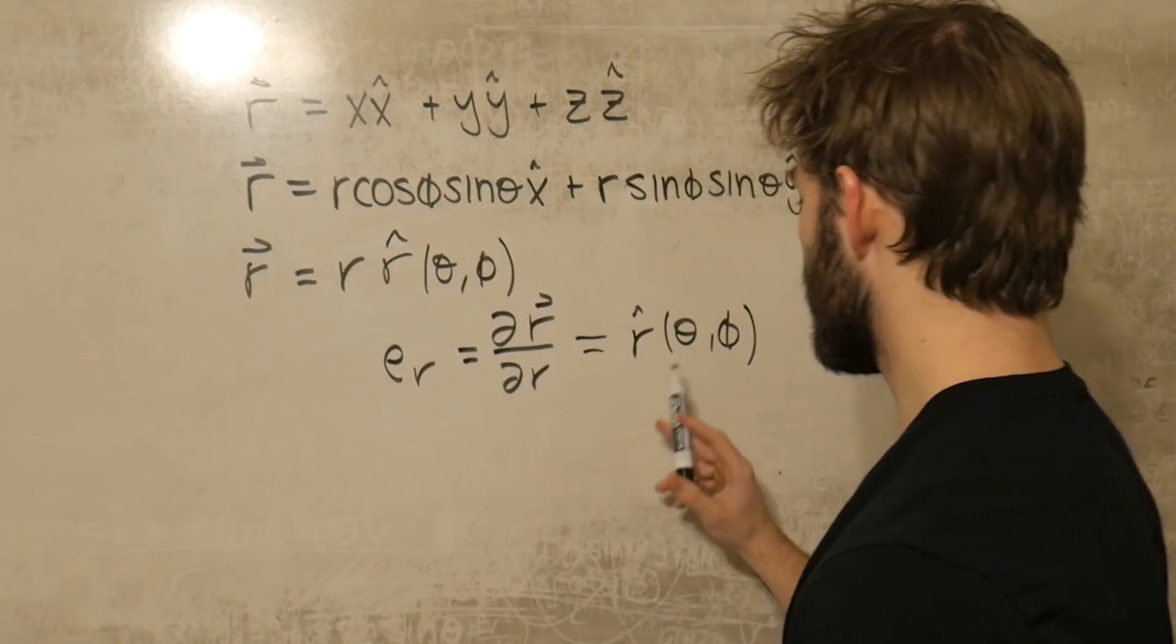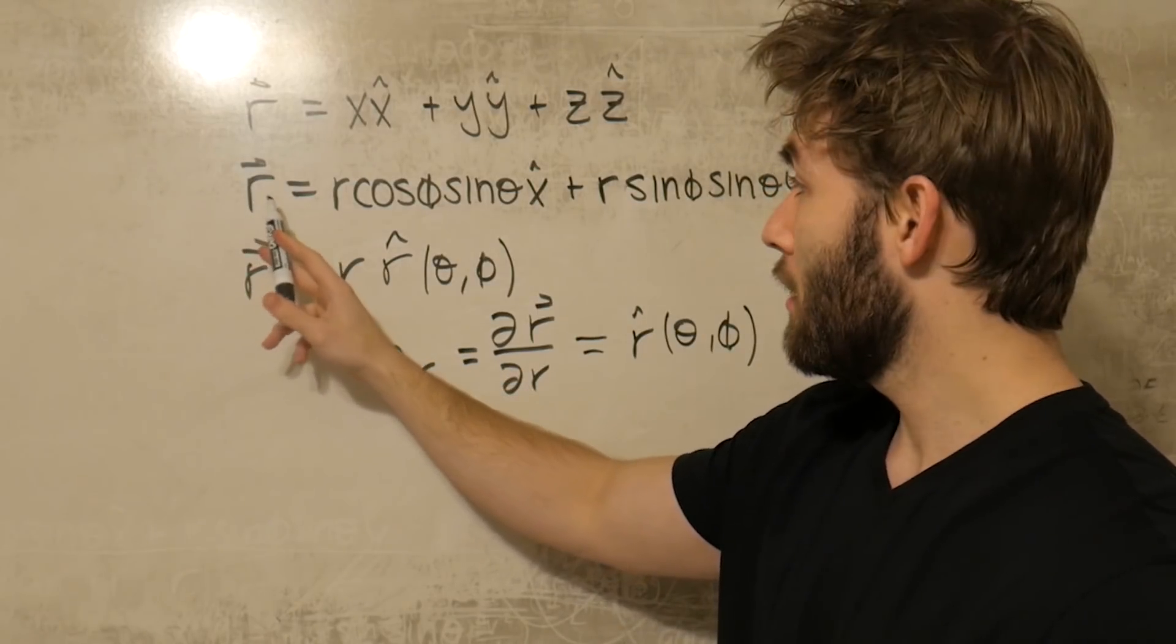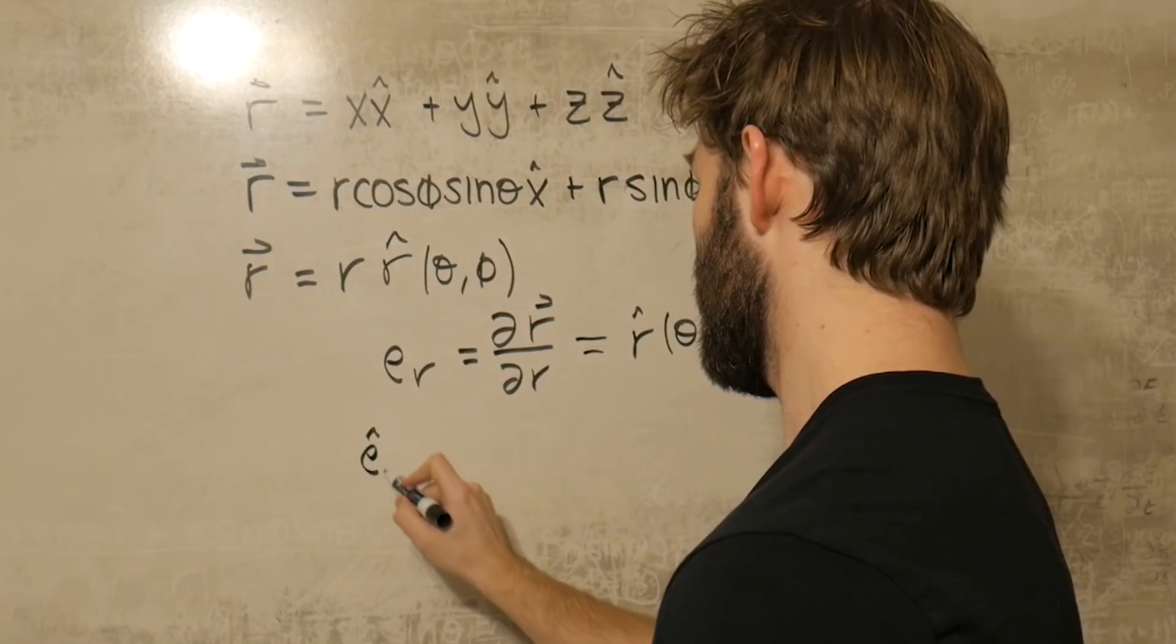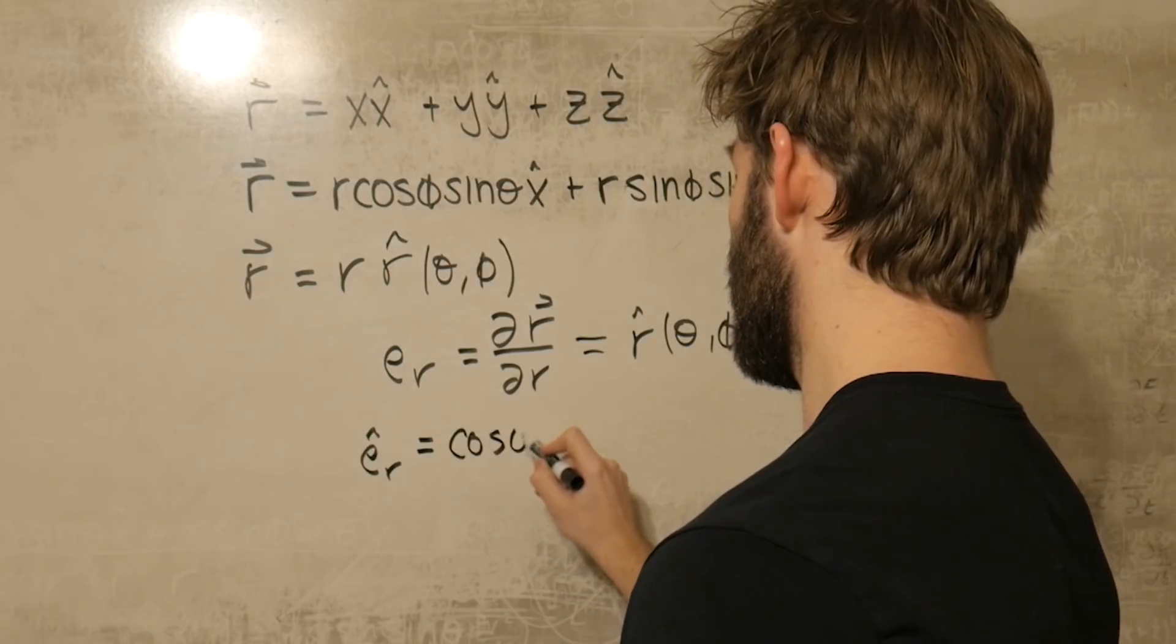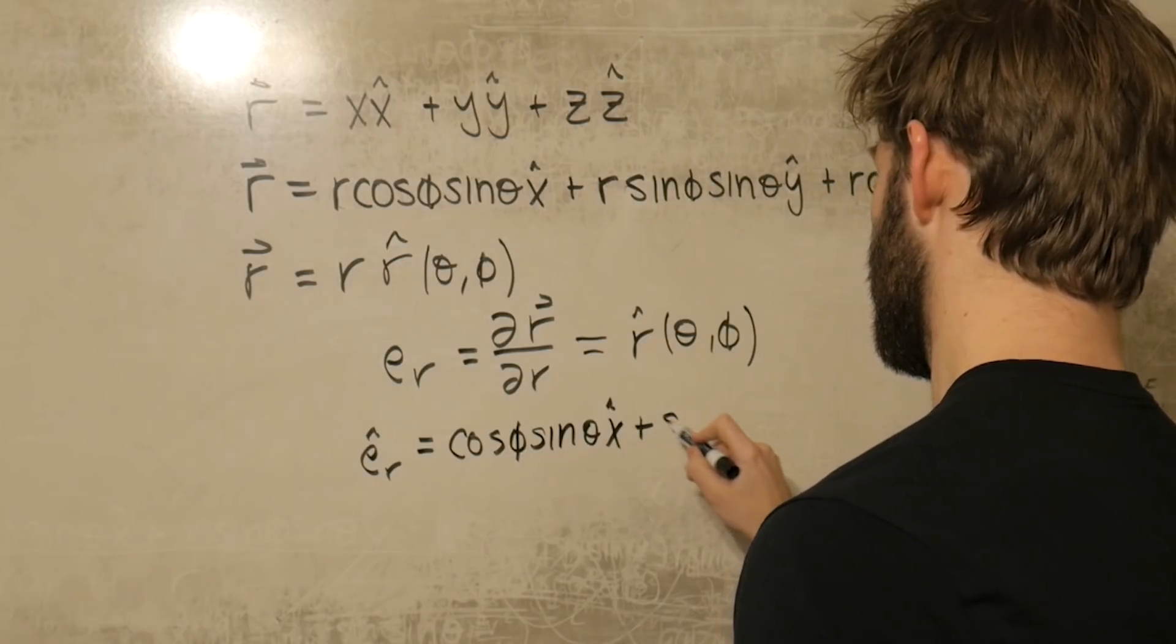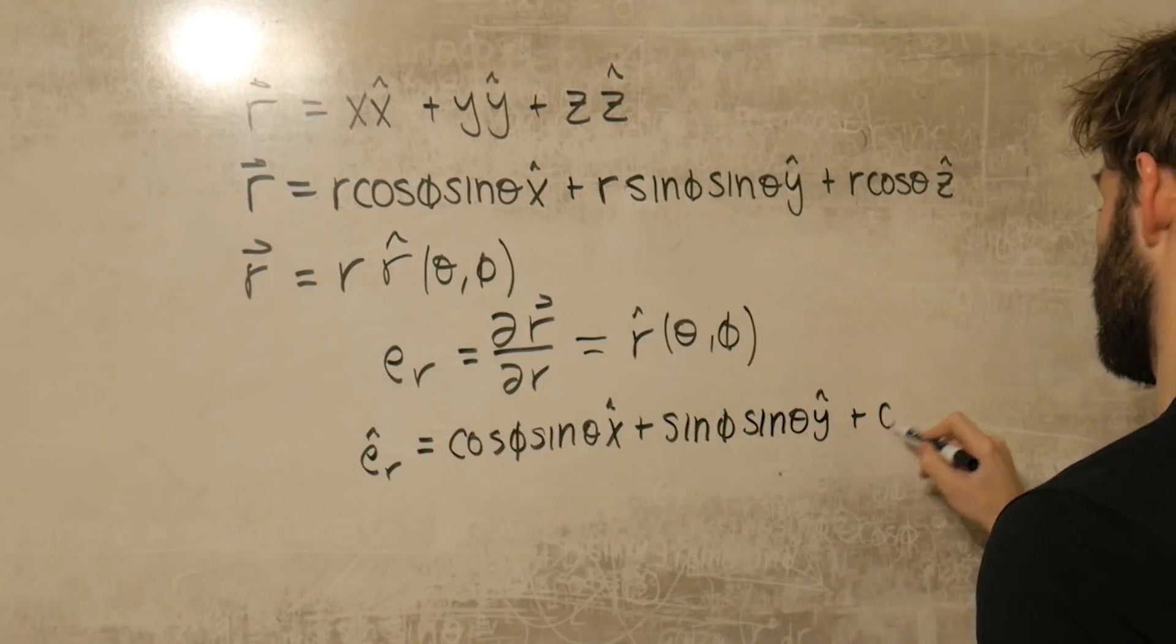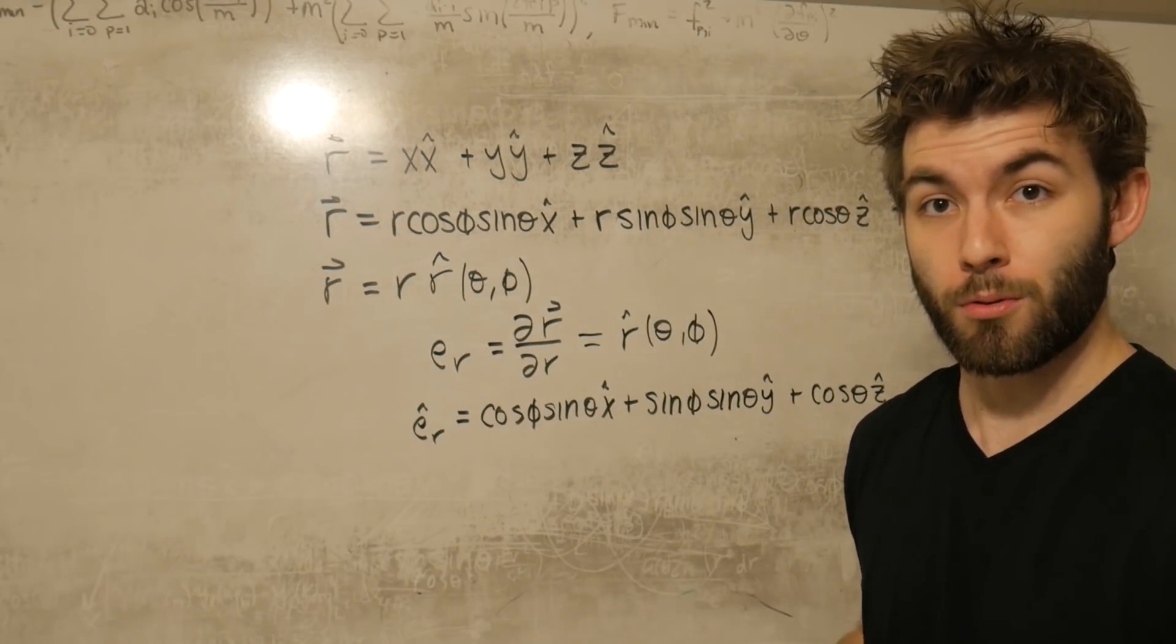Well we can already define what this r hat must be because it's just going to be the r vector divided by the magnitude of r. But since we have an r in each of these terms here, dividing by the magnitude is just going to give us this. So we get e hat r is equal to cosine phi sine theta x hat plus sine phi sine theta y hat plus cosine theta z hat. And then we have the first unit vector in spherical coordinates.